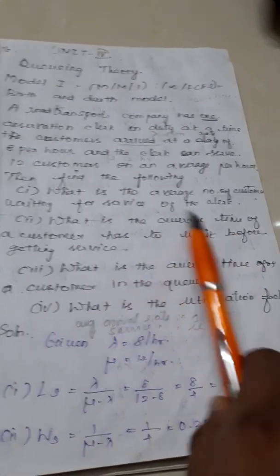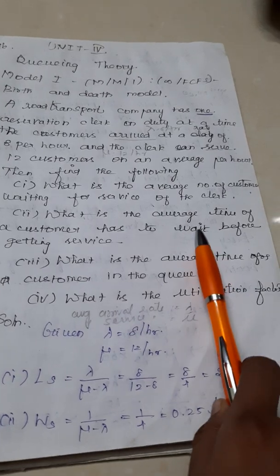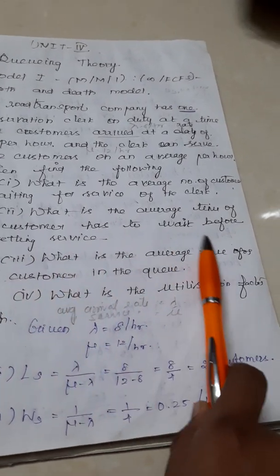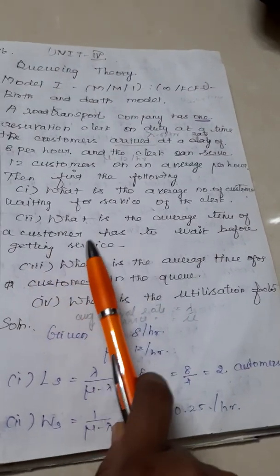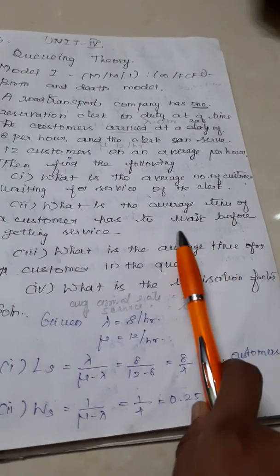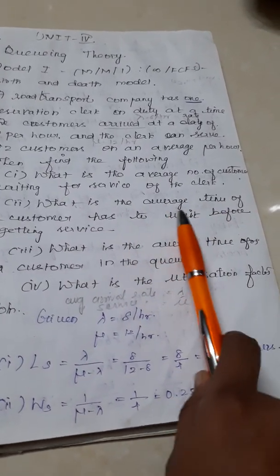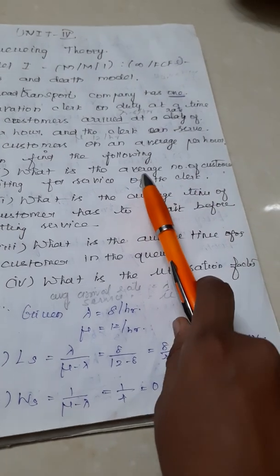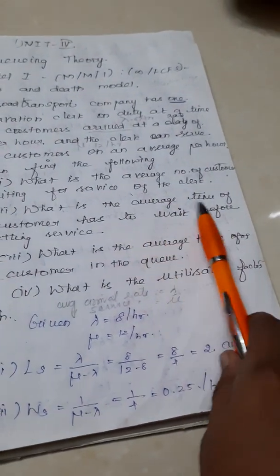Second one, average time of a customer waiting before getting service. Again, before getting service means it includes a person involved in the service counter too. So average time, number of customers means length.